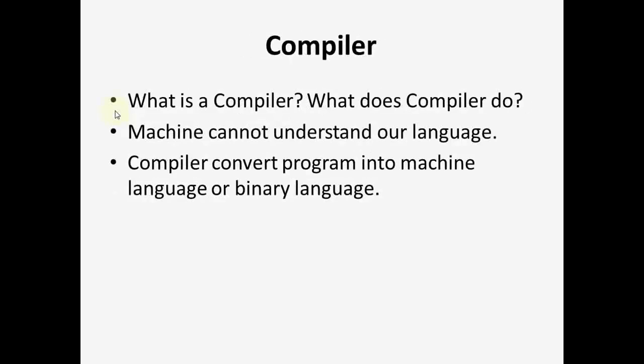Compiler. A machine cannot understand our language, so the compiler is a software that converts our program or source code into machine language or binary language — that is a combination of 1s and 0s. So we can simply say that a compiler converts our program into machine language.